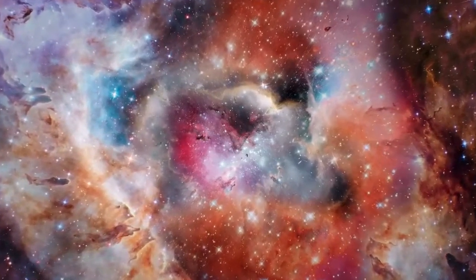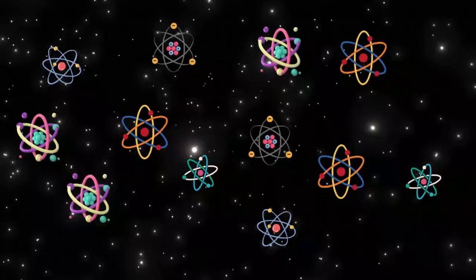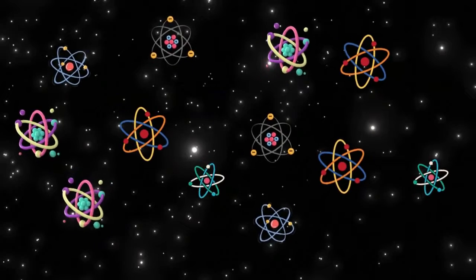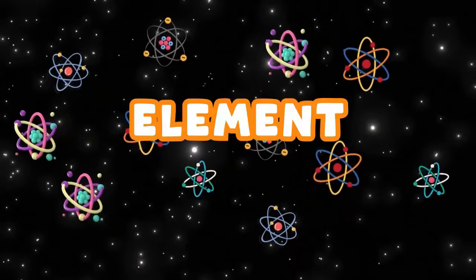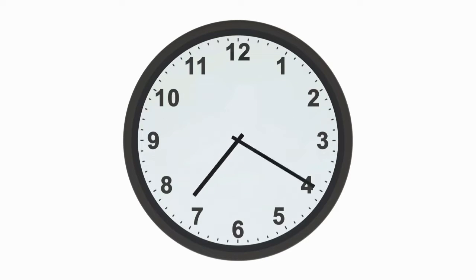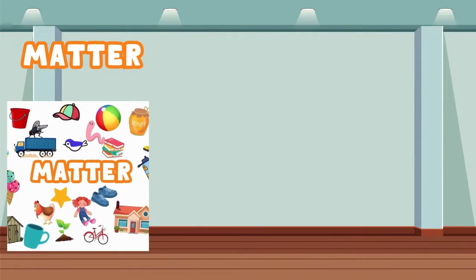The universe is full of all sorts of different atoms, each with a different number of protons, neutrons, and electrons. Each different atom is called an element. Let's recap: all matter is made from atoms. Atoms are the building blocks of matter.